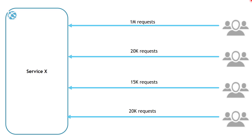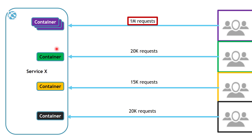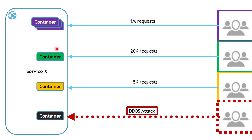Now let's go to the second example. We have different clients sending a different number of requests to Service X. We will create different containers for each client workload to make sure they are separate from each other. If one client is sending an overwhelming number of requests to Service X, we can easily scale up the container dedicated for that client, leaving other containers able to perform other clients' requests. And if one of the clients is performing a DDoS attack, it's going to affect only one container dedicated for that particular client, leaving other containers up and running.